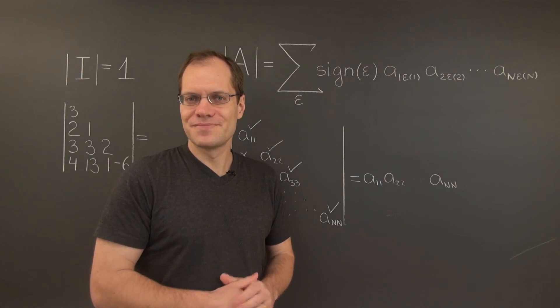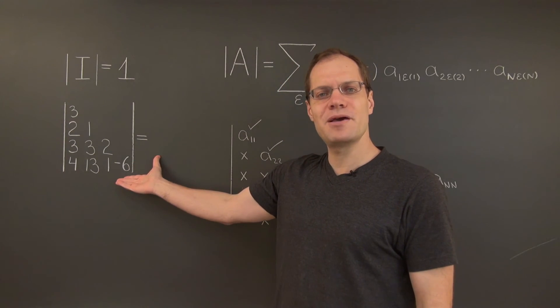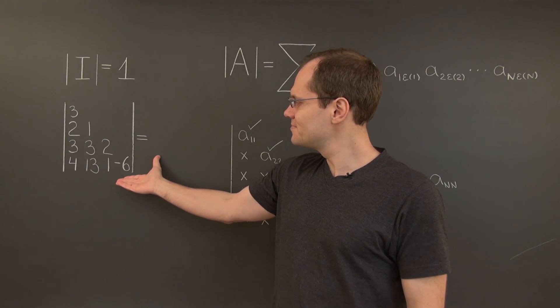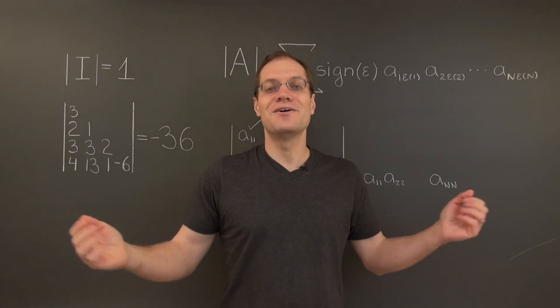That's all there is to it. Let's just do one quick example. And the determinant of this matrix is minus 36. And that's all.